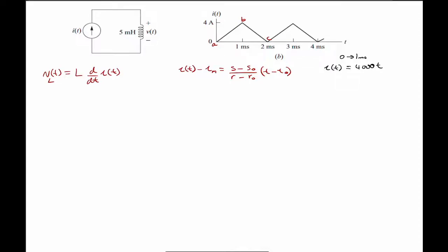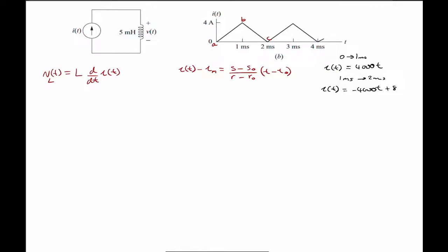For the second half of the triangle, moving from 1 millisecond to 2 milliseconds, we go from B down to C — that's 0 minus 4, giving negative 4 in the numerator, over 1 millisecond in the denominator, and starting from a magnitude of 4. This gives the current from 1 to 2 milliseconds as I(t) = −4000T + 8.